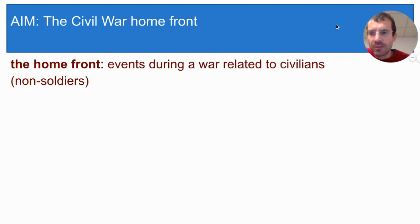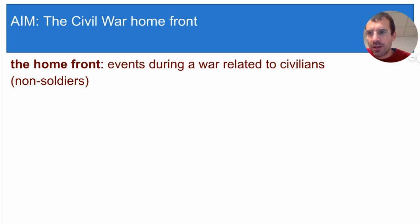You don't have to write this term down, but the home front refers to events during a war that are related to civilians or non-soldiers. In other words, it's what's happening to the men, women, and children who aren't off fighting. In the last lesson you saw the experience of slaves on the home front, how they were both impacted and not impacted by the Emancipation Proclamation. Today you'll look at the home front experiences of some other groups.